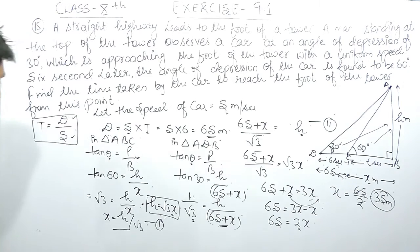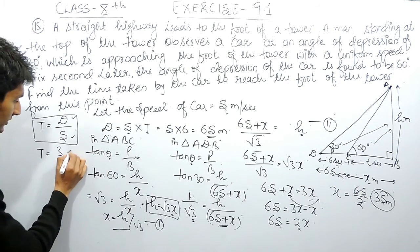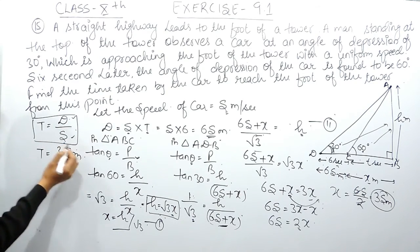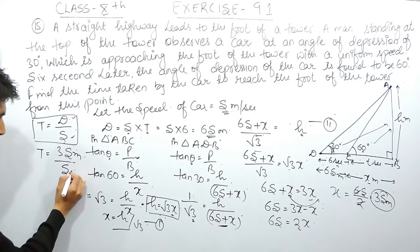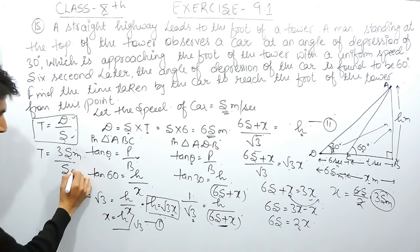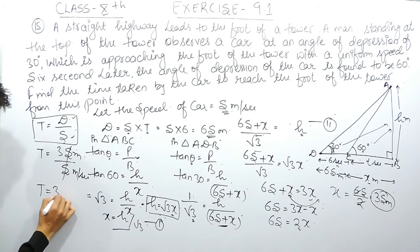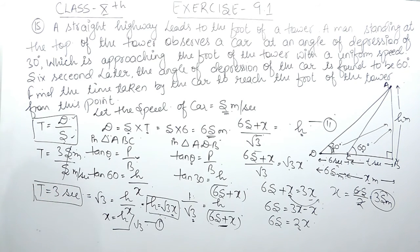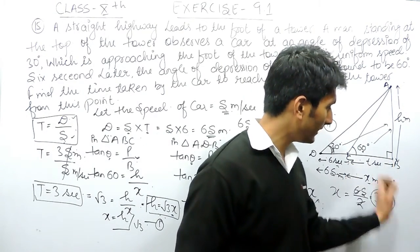Now we need to find the time taken by the car to travel this distance of 3s meters. The distance is 3s meters and the speed is s meters per second. Using time equals distance upon speed, the time equals 3s divided by s. Since s cancels out, the time equals 3 seconds. So the time taken by this car to reach the foot of the tower from this point is 3 seconds.